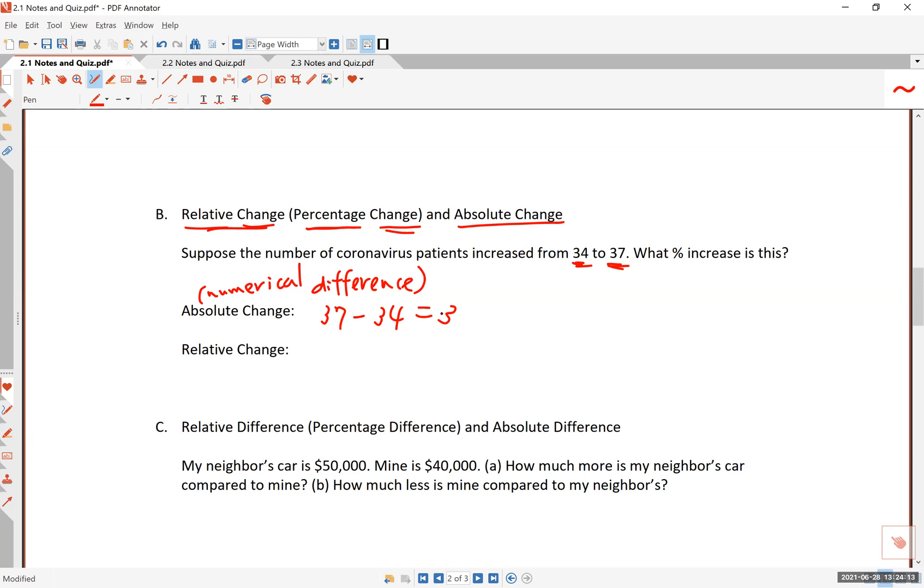So three is the absolute change - absolute meaning exactly what number. Relative, you know that the word absolute and relative are antonyms, they're opposite words. We have absolute and then we have relative. Absolute has to do with a numerical difference, relative has to do with a percentage. Now the question is what do we use as a base of the percentage?